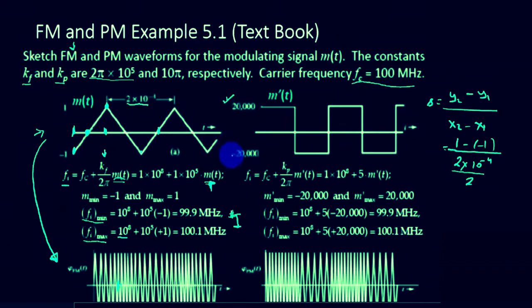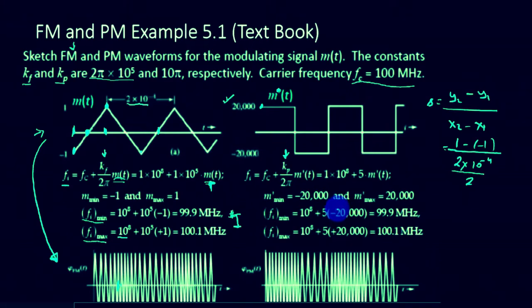For the positive slope we get plus 20,000 and for the negative slope we get minus 20,000. That is our M dot of t. The instantaneous frequency for PM is then Fc plus Kp over 2 pi times M dot of t. The maximum value of M dot is 20,000 and minimum is minus 20,000, giving 100.1 and 99.9 megahertz. For PM the frequency is consistent within each region, whereas for FM it was increasing linearly then decreasing.